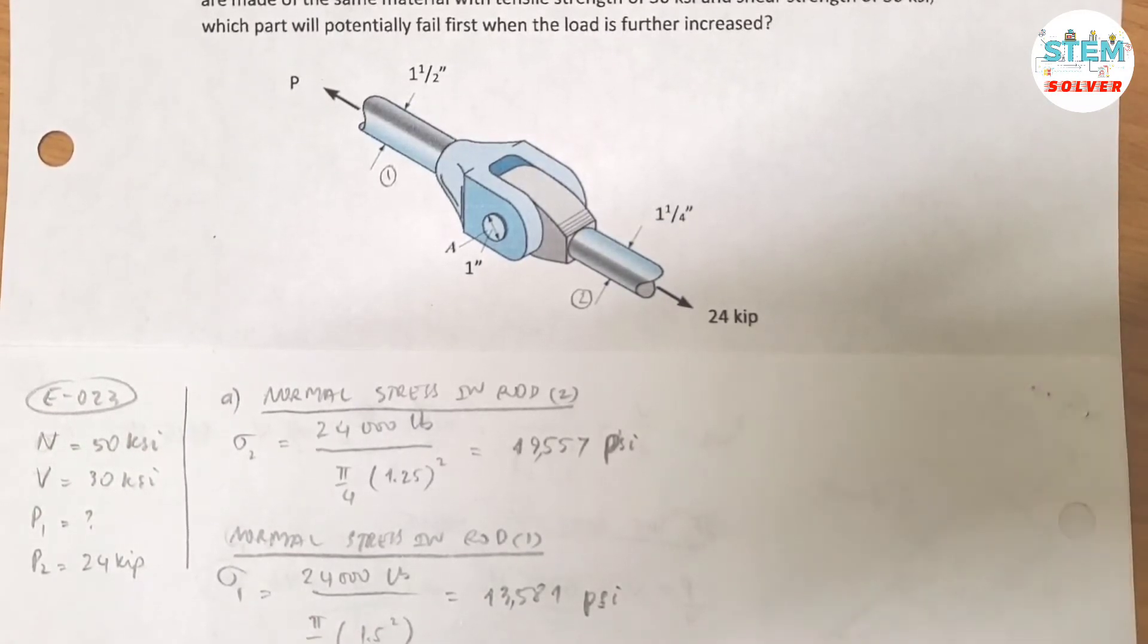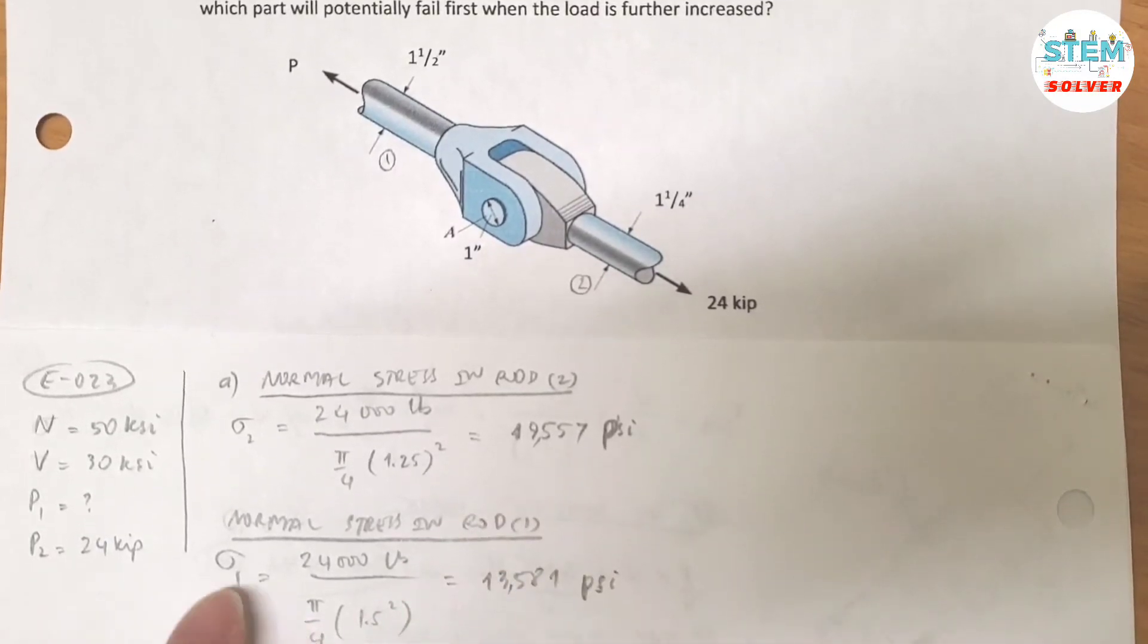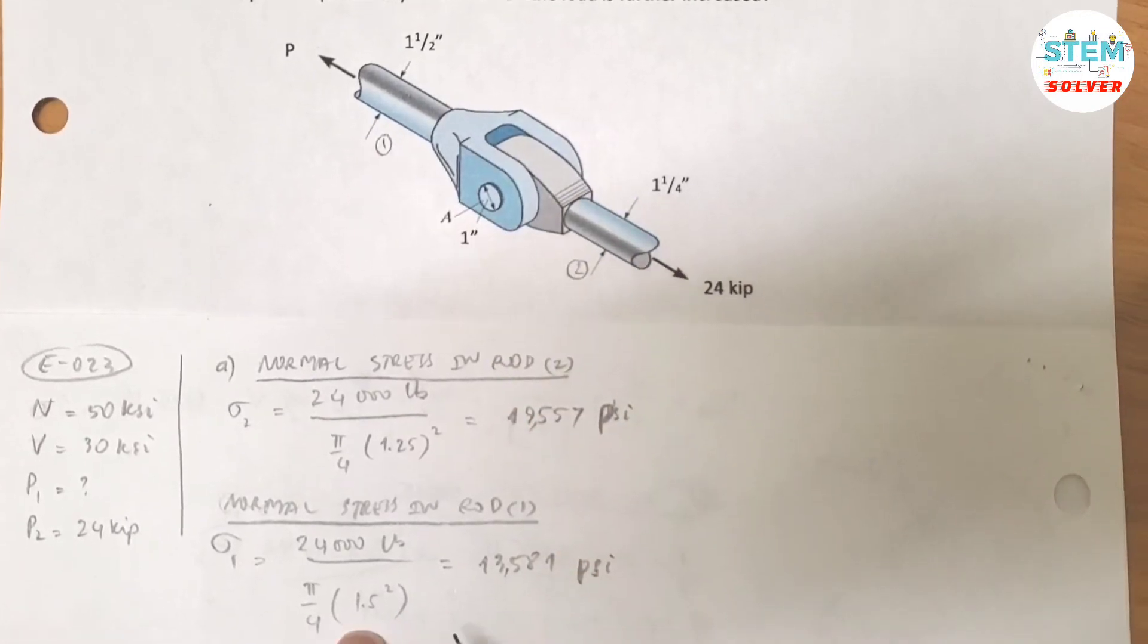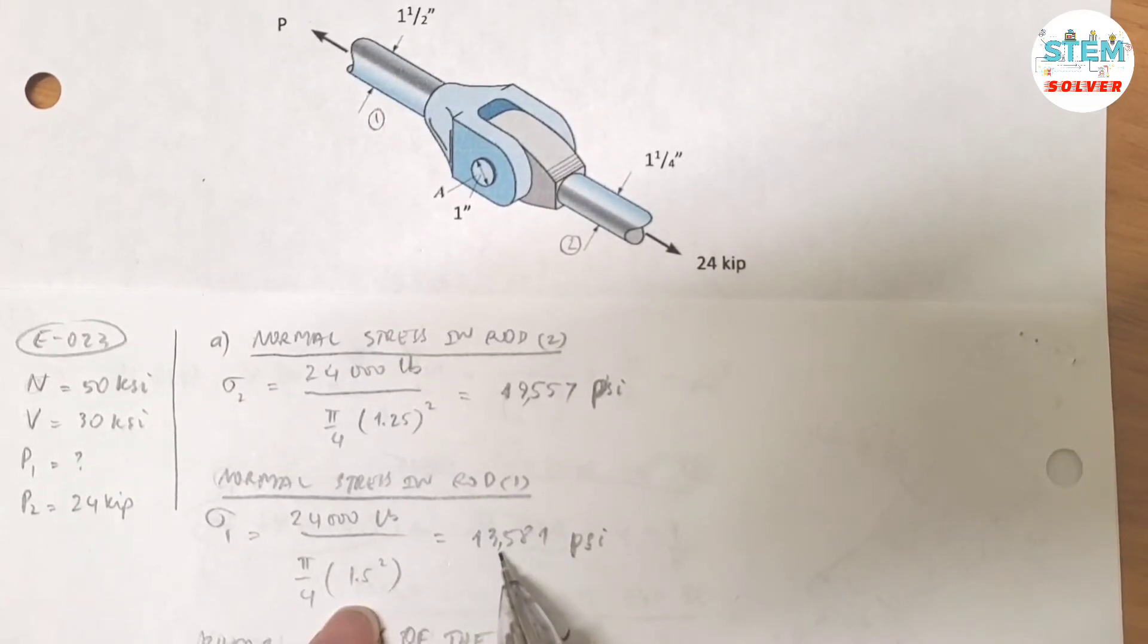Okay, so looking down here guys, normal stress in rod 1 is equal to 24,000 pounds divided by pi over 4 times the diameter which is one half squared. Doing this calculation it gives you 13,581 psi. Okay, so that is the normal stresses in rod 1 and 2.